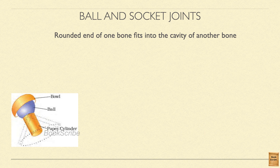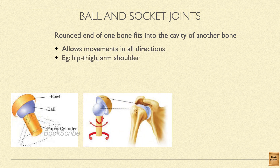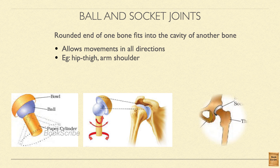In a ball and socket joint, a long arm bone has a round ball-shaped end that enters the shoulder bone, which is hollow inside — that hollow space is called the cavity. This type of joint allows you to move your arm freely. Another example is your hip and thigh bone — your hip bone has a cavity and your thigh bone enters that cavity, and you can rotate it freely.